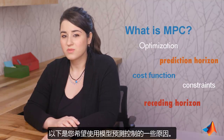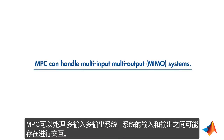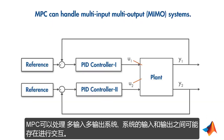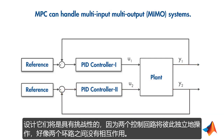Here are some of the reasons why you would want to use model predictive control. MPC can handle multi-input, multi-output systems that might have interactions between their inputs and outputs. For example, in this MIMO system, a change in the second output also affects the first output. If we were to use PID controllers, designing them would be challenging because the two control loops would operate independent of each other, as if there are no interactions between the two loops.